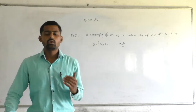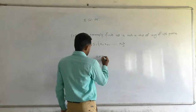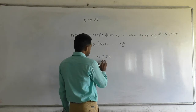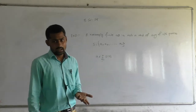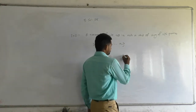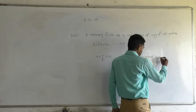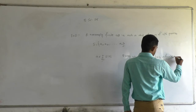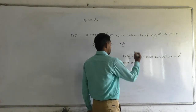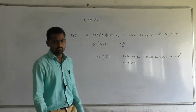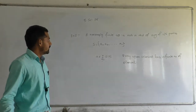First, note the definition of a neighborhood, which says that N is said to be a neighborhood of a point a if there exists an open interval I containing a and contained in N. Now, every open interval necessarily has an infinite number of elements.